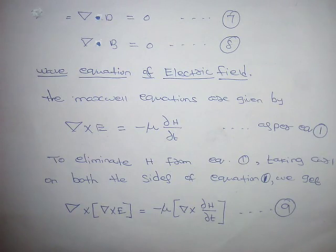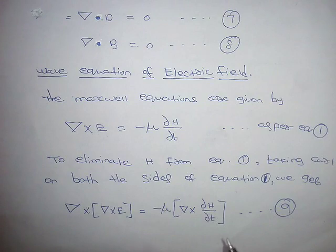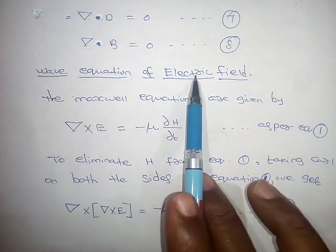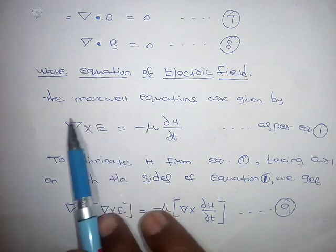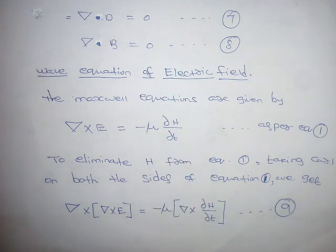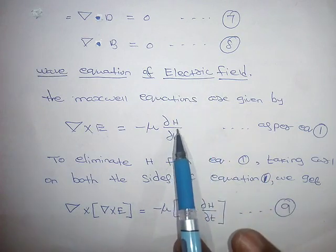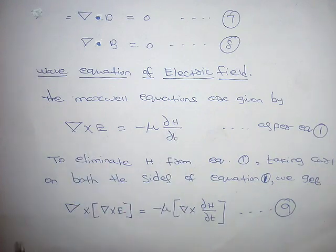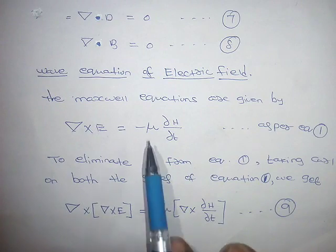Now we derive the wave equation in terms of the electric field E. We have picked two equations involving the electric and magnetic fields. The first equation is del cross E equal to minus mu dou H by dou t. To eliminate the magnetic component H, we apply the curl to both the left-hand side and the right-hand side. We apply the curl to del cross E equal to minus mu dou H by dou t.